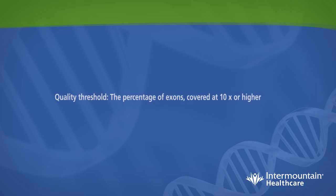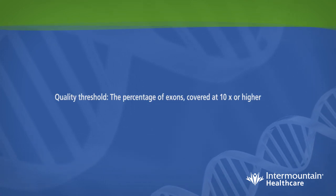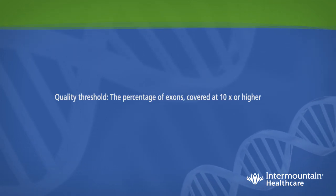The second metric they focus on is the quality threshold, which is defined as the percentage of exons covered at 10x or higher. What we do in the lab is we definitely capture that metric, but we also go beyond and capture the percentage of exons covered at 100x or higher. We recognize that these are patient samples and we are a clinical laboratory, so we want to send in the highest quality of data within the first tier of bioinformatics into annotation.